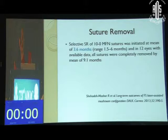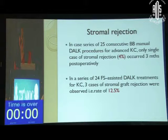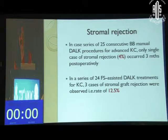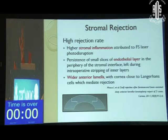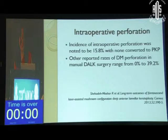Early suture removal could be done as early as three to four months, and all sutures removed as early as nine to ten months. A concern is that stromal rejection in the limited evidence available appears more common with femtosecond laser DALK compared to manual big bubble DALK — 12% versus 4%. This is probably due to higher stromal inflammation from persistent small slices of endothelial layer in the periphery.